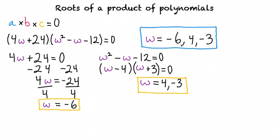So to find values of the variable that make a product of polynomials equal zero, we set each of those polynomials equal to zero and find which values of the variable would make that true. Then these values are our answer. Way to go!